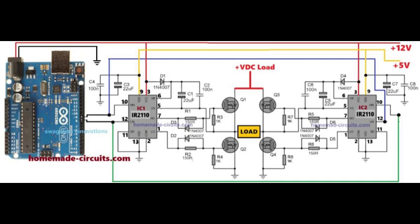Gate resistors 150 ohms, R1, R6, control MOSFET switching speed. Plus 12V powers the IR2110 gate driver circuits and the Arduino board. Plus 5V powers the IR2110 logic circuits.